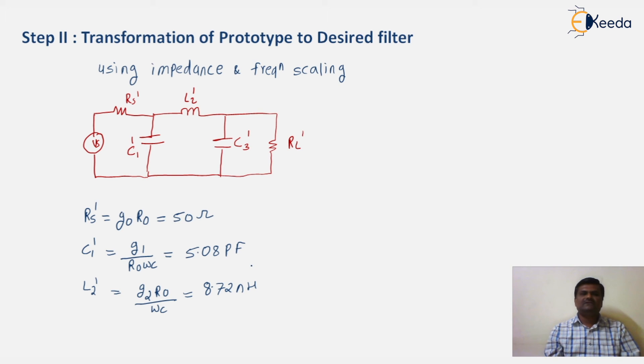We know that C1 dash and C3 dash both are symmetrical. Therefore, both have same values. So write C3 dash formula as G3 divided by R0 Omega C. When you put the value, you will get the same value of C1 dash, that is 5.08 picofarad.